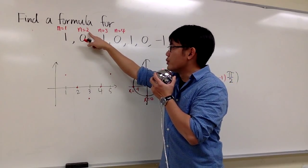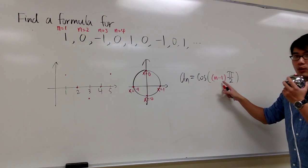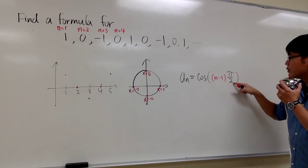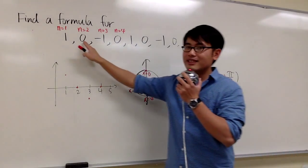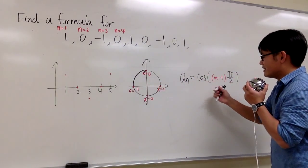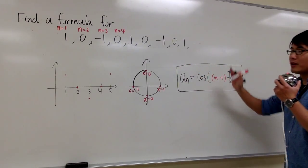And then if n is equal to 2, plug in 2 into this n, 2 minus 1 is 1, 1 times pi over 2 is pi over 2 inside. Cosine of pi over 2 will give us 0. So as you can see, this right here is a formula for that.